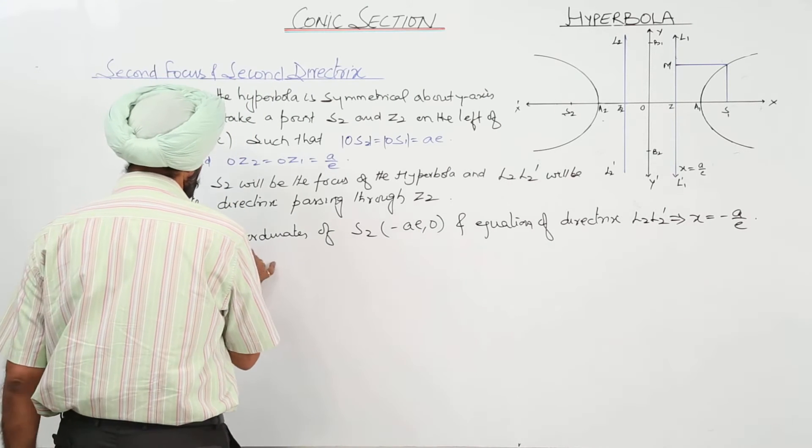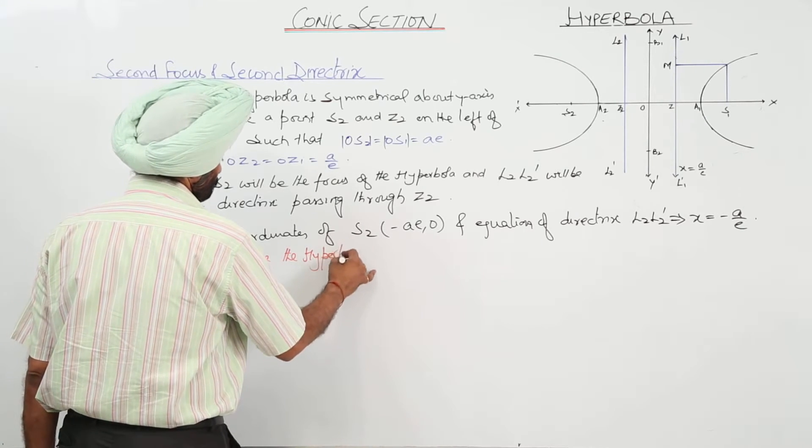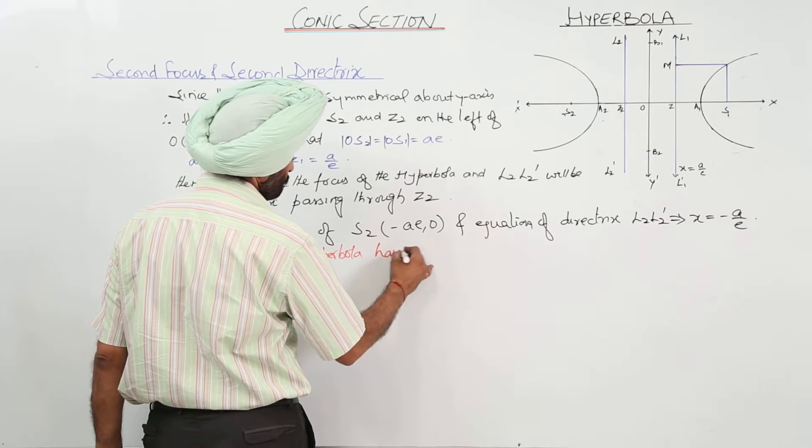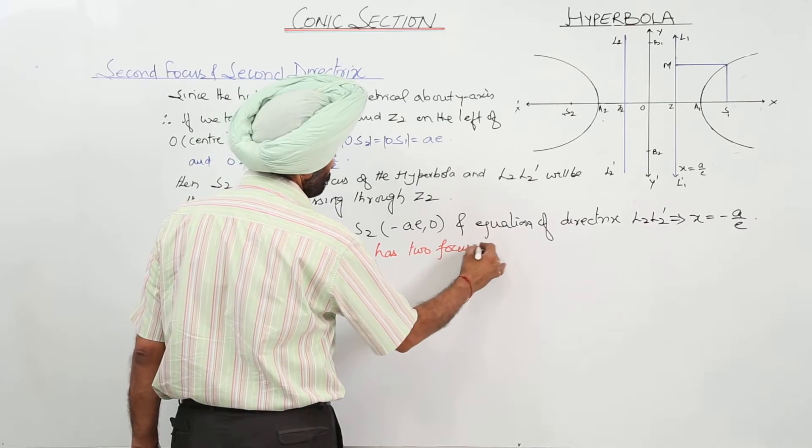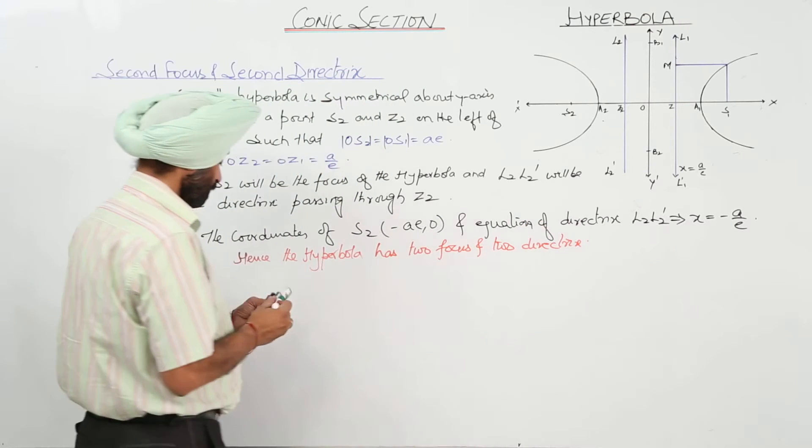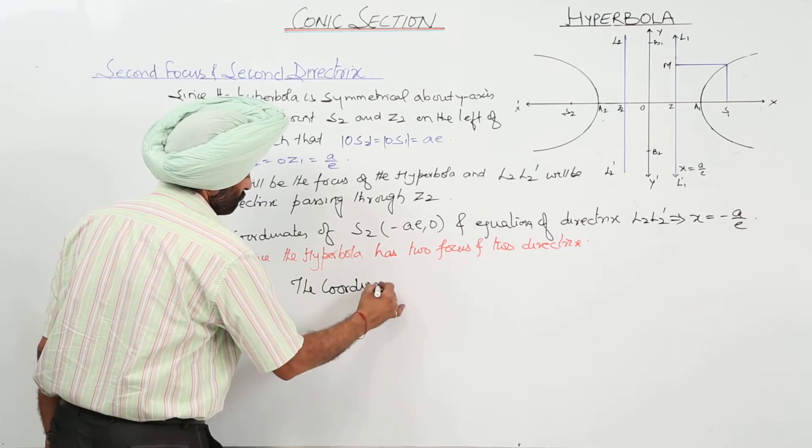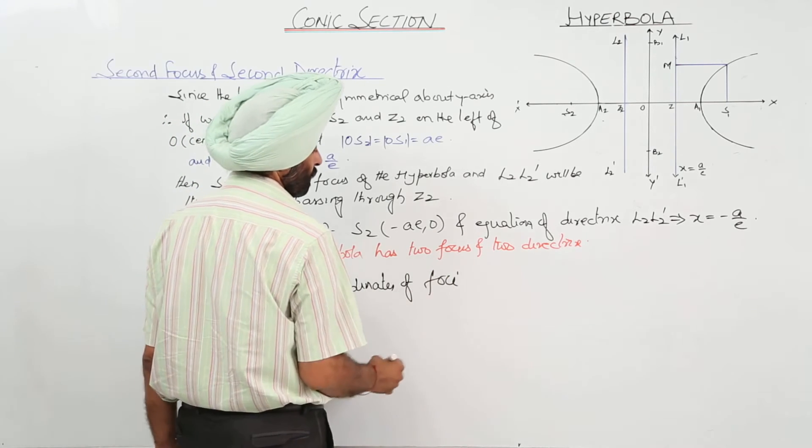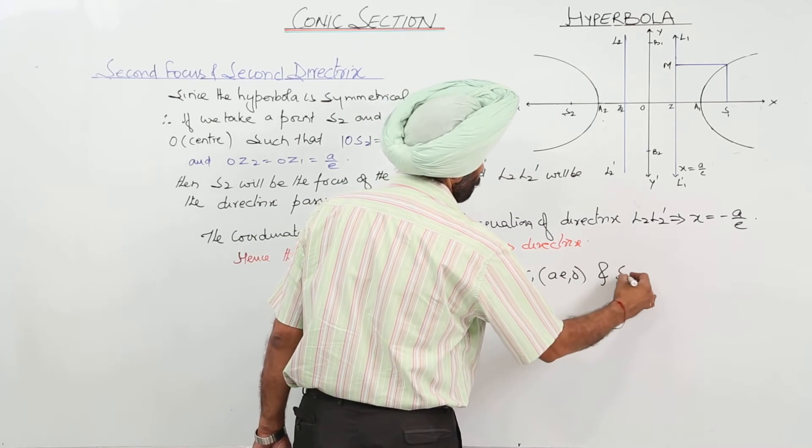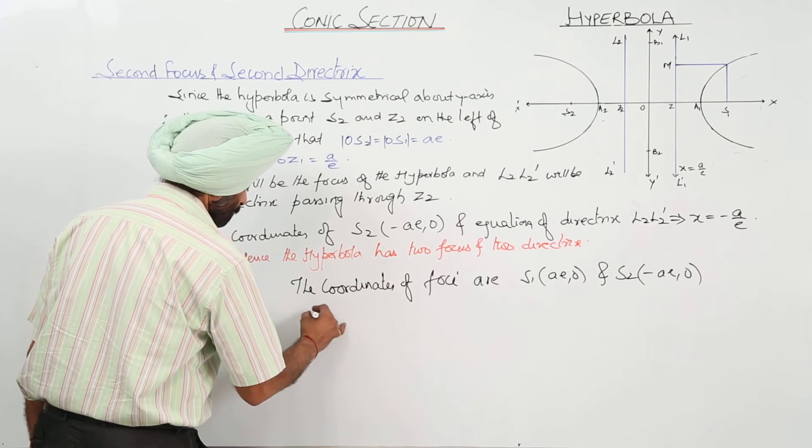Hence, the hyperbola has two focus and two directrix. Now, the coordinates of foci are S1 with AE, 0 and S2 with negative AE, 0.